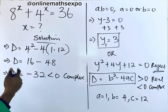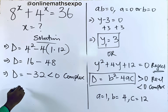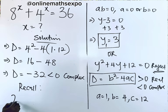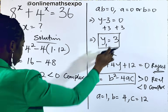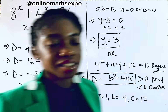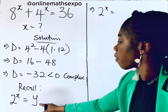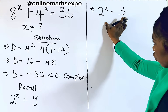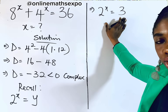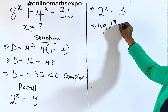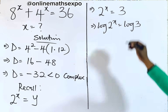So we only use y equals 3. Recall that we defined 2 to the power of x as y. Since y equals 3, we have 2 to the power of x equals 3. To solve for x, we need to take logarithm on both sides, giving log of 2^x equals log of 3.